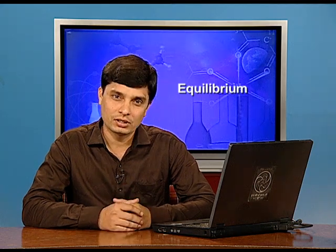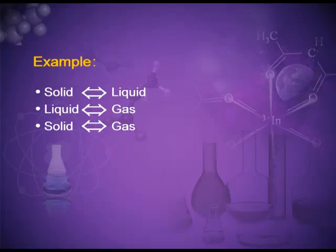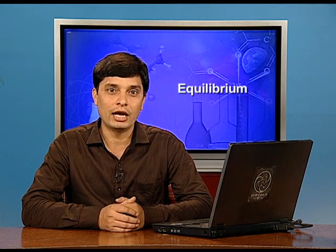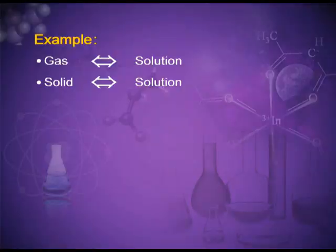Equilibrium in physical processes: the most common equilibria involving physical processes are those which involve phase transformation. For example, solid can transform into liquid and liquid into solid; liquid to gas and gas to liquid; solid to gas and gas to liquid. Besides these, there are equilibria involving dissolution of solids or gases in liquids — gas changes into solution and solution back into gas; solid changes into solution and solution back into solid.